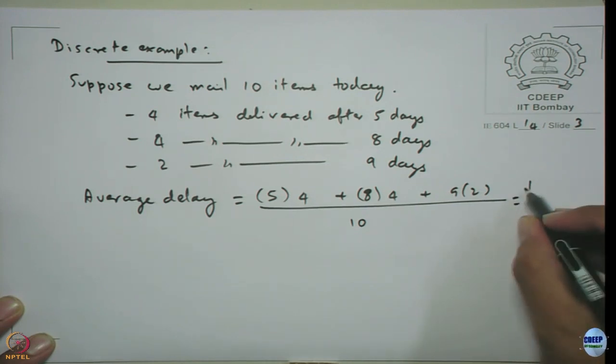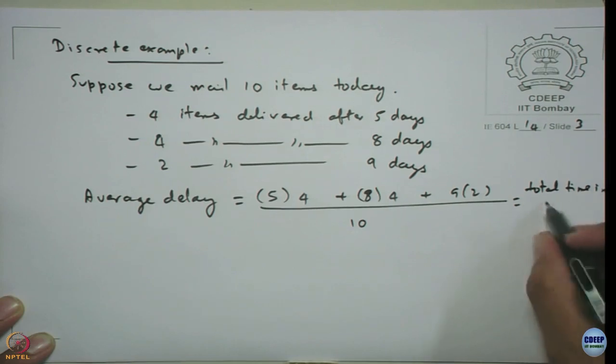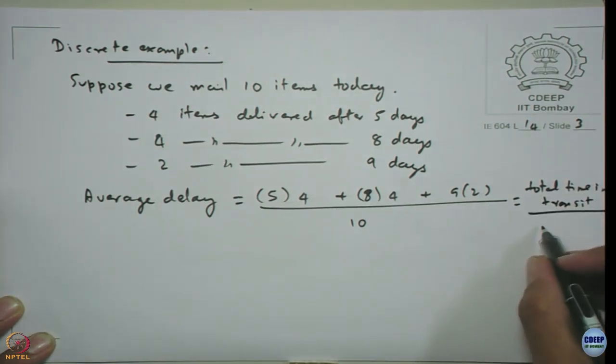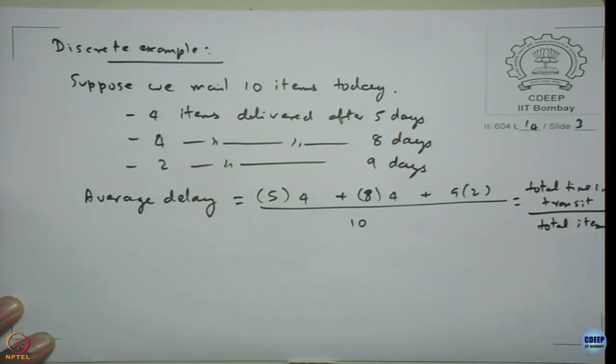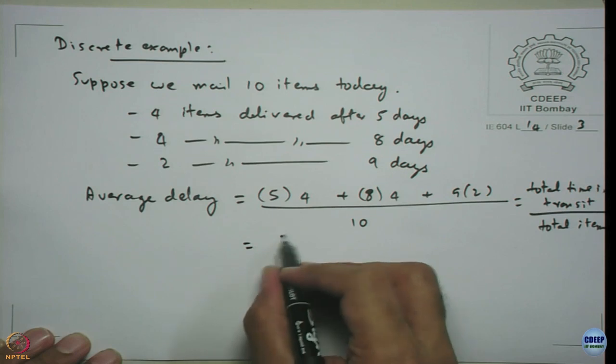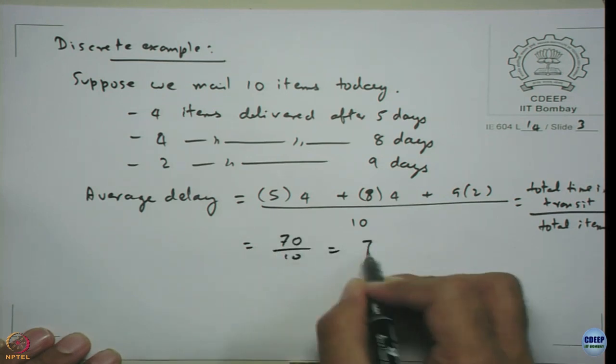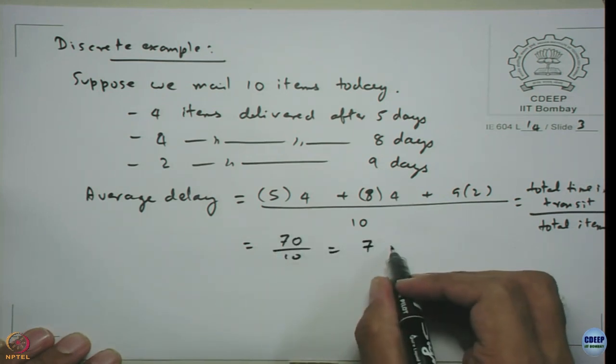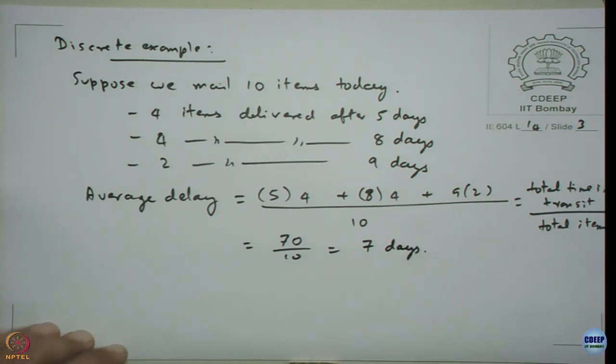This is nothing but total time in transit divided by the total items. For a discrete case it is quite intuitive, we can compute it.